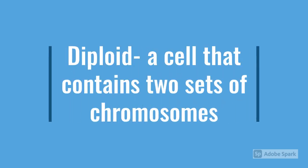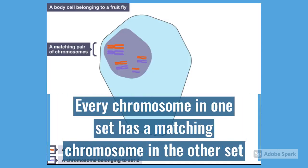Diploid refers to a cell that has two sets of chromosomes. You should already know about chromosomes, but if you don't, I will leave a link to my video about DNA. From this diagram, you can see that each set has a specific chromosome. The orange-colored chromosomes belong to one set, and the purple-colored chromosomes belong to the other set. Since the cell has two different sets, it is called diploid.